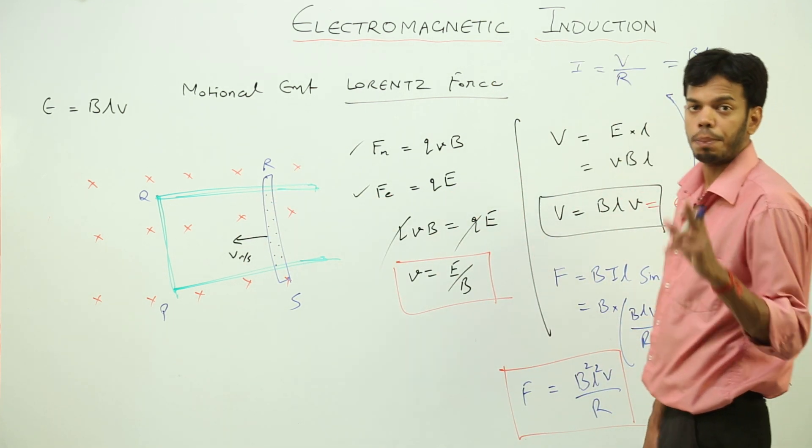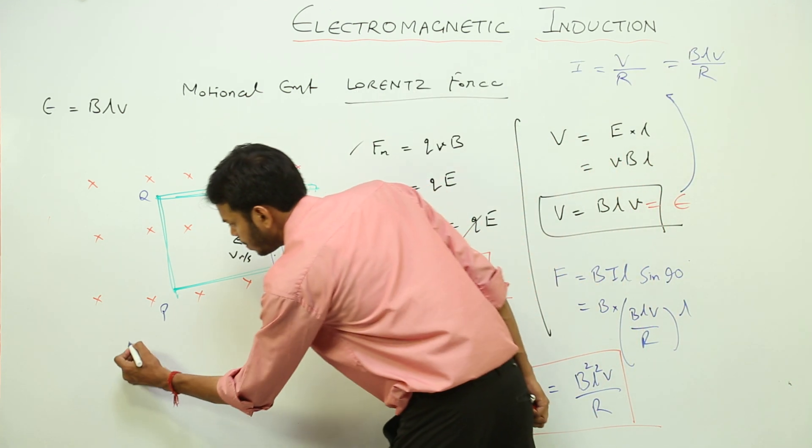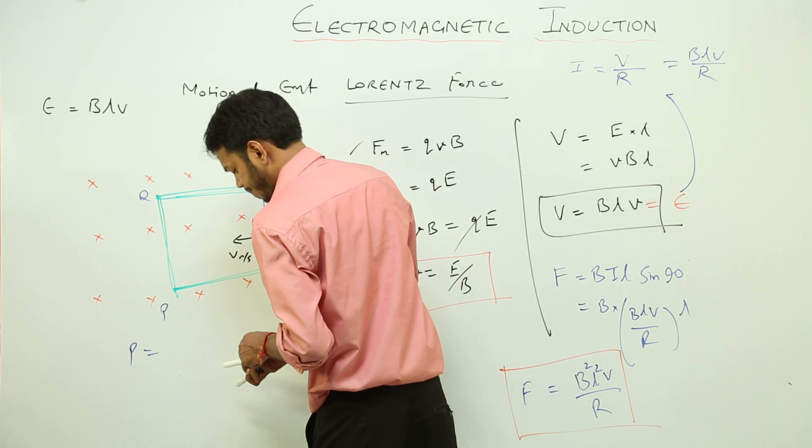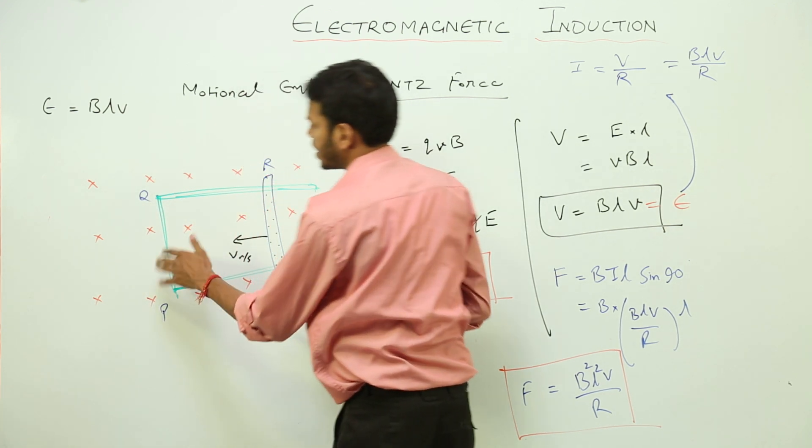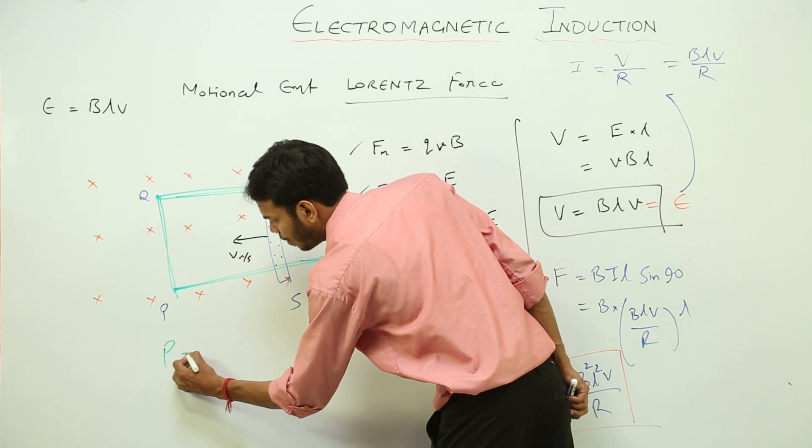We can also find the power dissipated by this motional EMF or induced EMF. Power dissipated has a very simple formula. This P is just a marking and right now I am using the word power. So this P stands for power dissipated.